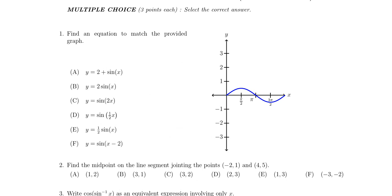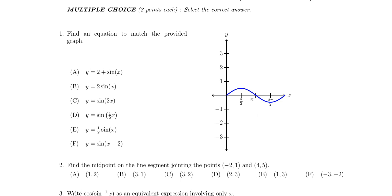Question number one: you'll be given the graph of some trigonometric function — maybe sine, cosine, tangent, secant, or whatever — and asked to identify the correct equation that produces that graph. We should be looking at things like period, amplitude, x-intercepts, reflections, and the midline. It is a multiple choice question, so at the very least you could try to solve it by process of elimination, removing answers you know are incorrect. This question is similar to what we saw on exam two, question three.